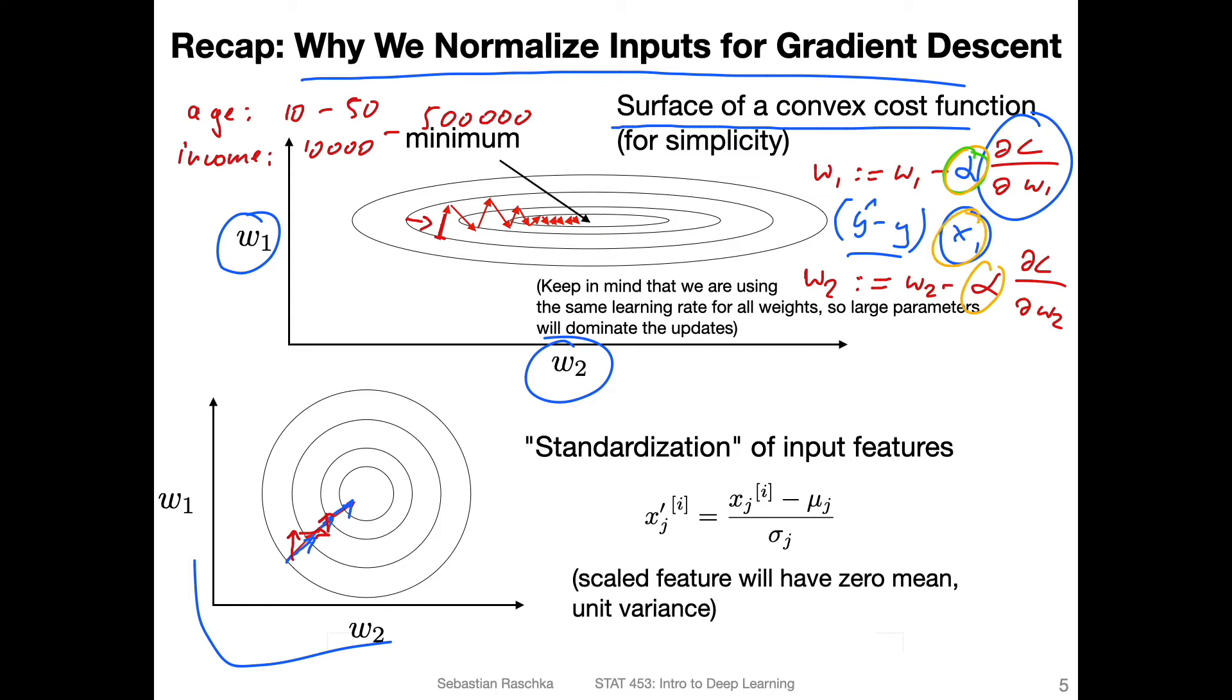Because if this one is like 1000 times larger, we may have to use 1000 times smaller learning rate to get good behavior. Another thing is also that most optimization algorithms really work well if the features are centered at zero and have only small values around zero.